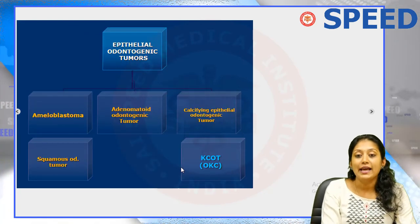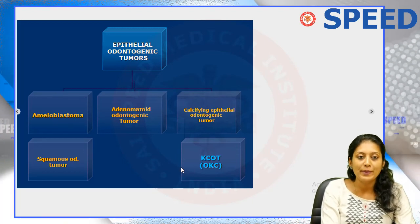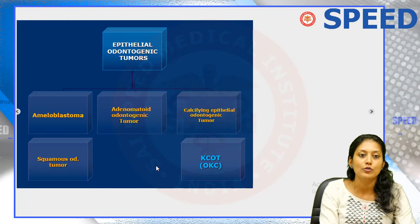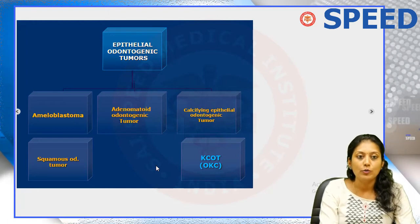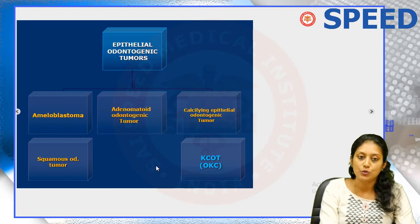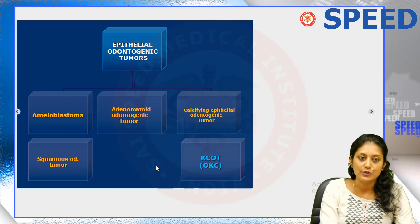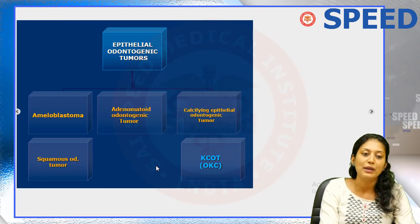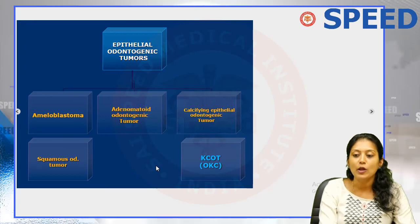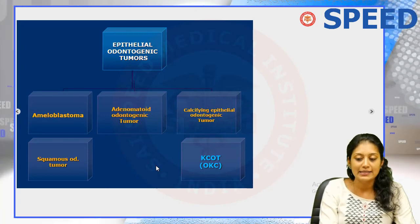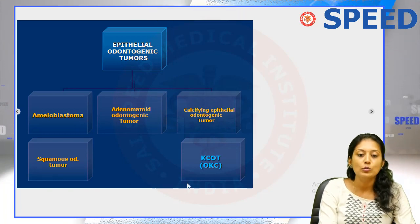The tumors that arise from odontogenic epithelium include four major types: ameloblastoma; AOT, the adenomatoid odontogenic tumor; CEOT, the calcifying epithelial odontogenic tumor, also referred to as Pindborg tumor — in many MCQ questions you may see the option 'Pindborg tumor,' which is nothing but CEOT or calcifying epithelial odontogenic tumor; and a fourth tumor which is still to be named.